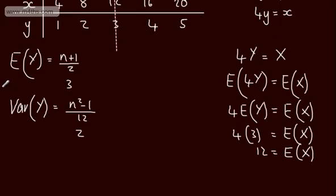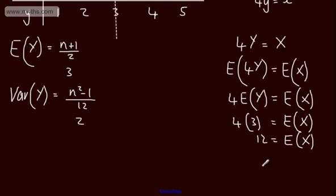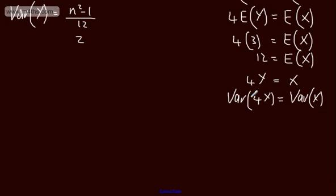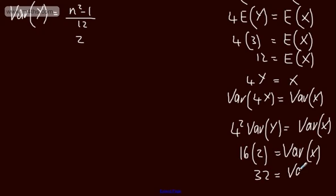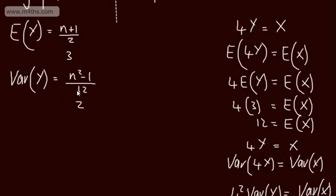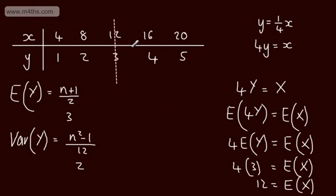Now let's consider the variance. Since 4y equals x, we have Var(4y) equals Var(x). With variance, we square the constant: Var(ax) equals a squared Var(x). So 4 squared times Var(y) equals Var(x), giving us 16 multiplied by 2 equals 32. So Var(x) equals 32. By applying these linear results, we can find the mean and variance of the original data set.